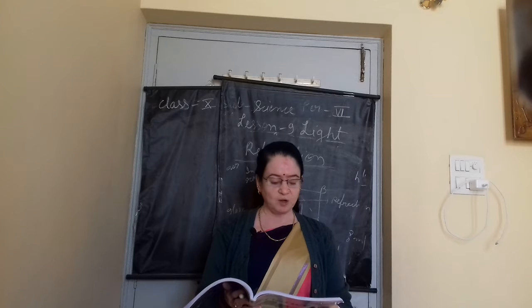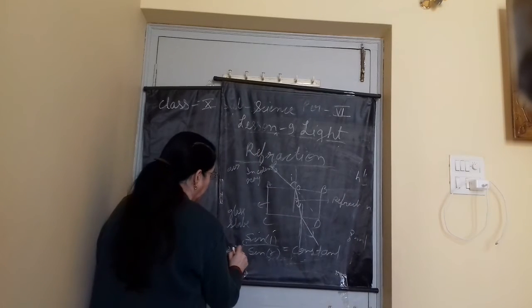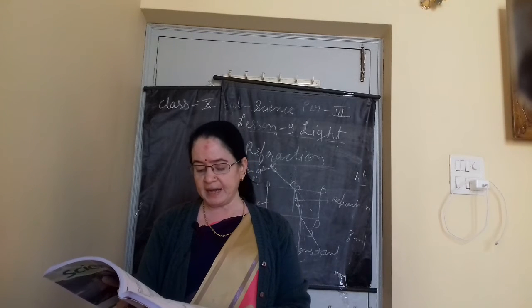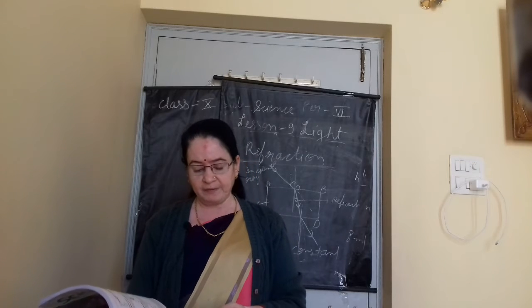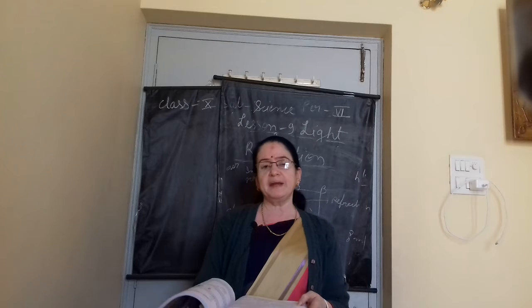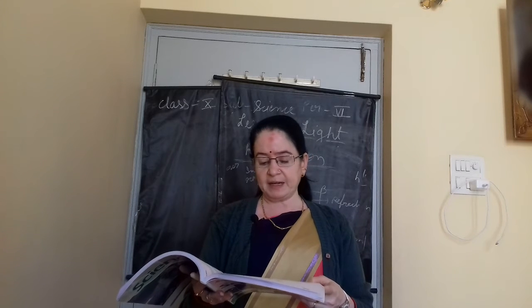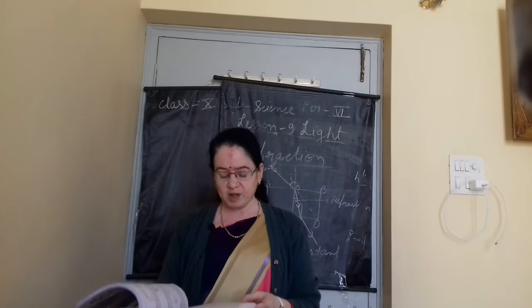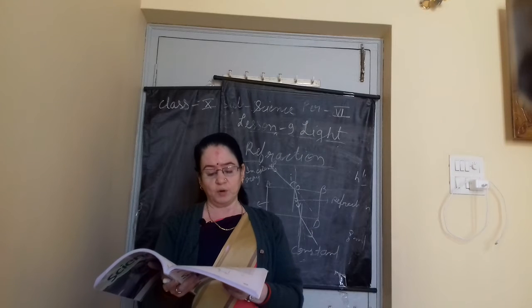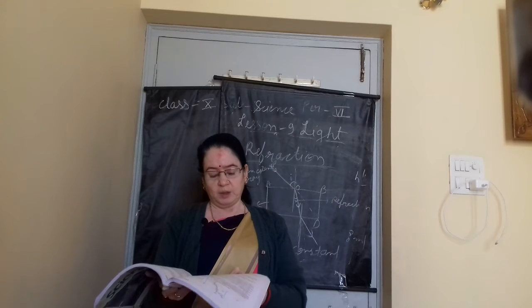This constant is the refractive index of the second medium with respect to the first medium, denoted as μ₁₂. So μ₁₂ = sin i / sin r = constant. If light enters from vacuum into any medium, then the refractive index of that medium with respect to air or vacuum is called the absolute refractive index. The refractive index μ₂₁ = speed of light in air / speed of light in medium = v₁/v₂.